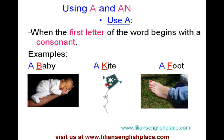When do we use A? We use A when the first letter of the word begins with a consonant. Baby begins with a consonant B, so we say 'a baby.' Kite begins with a consonant K, so we say 'a kite.' And foot begins with a consonant F — we say 'a foot.'